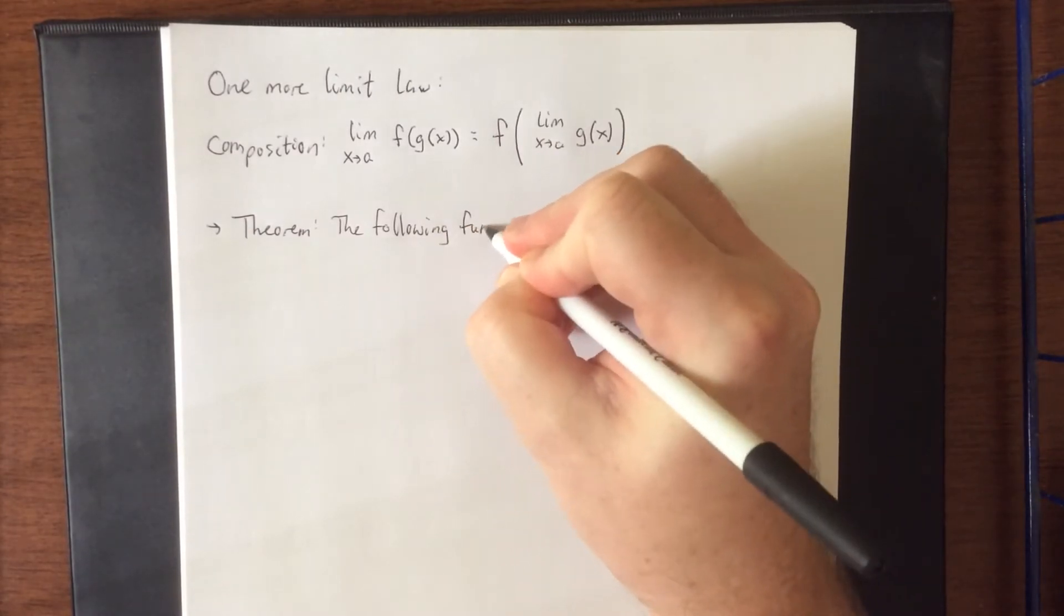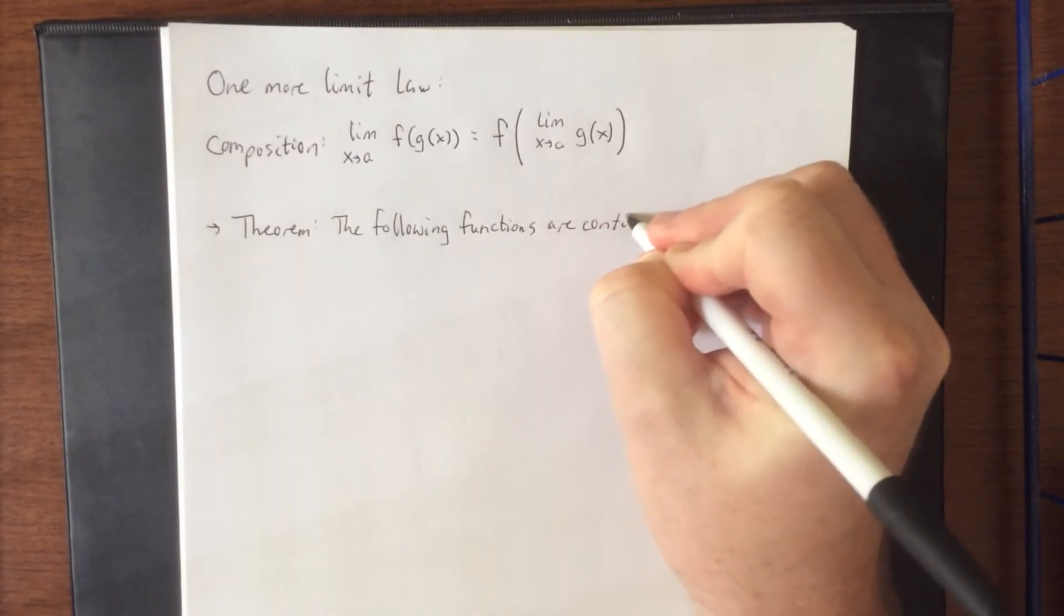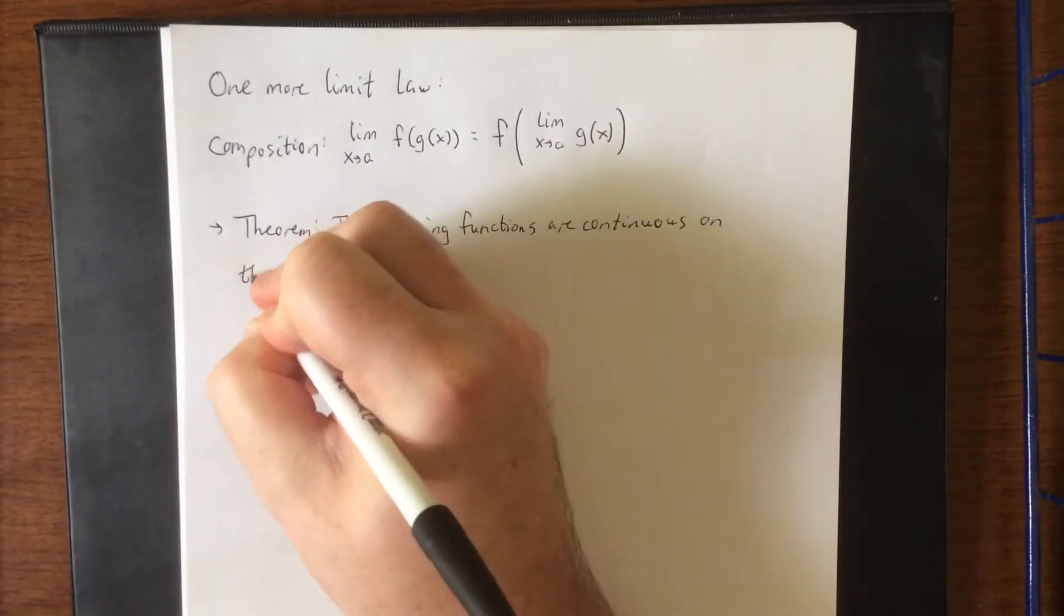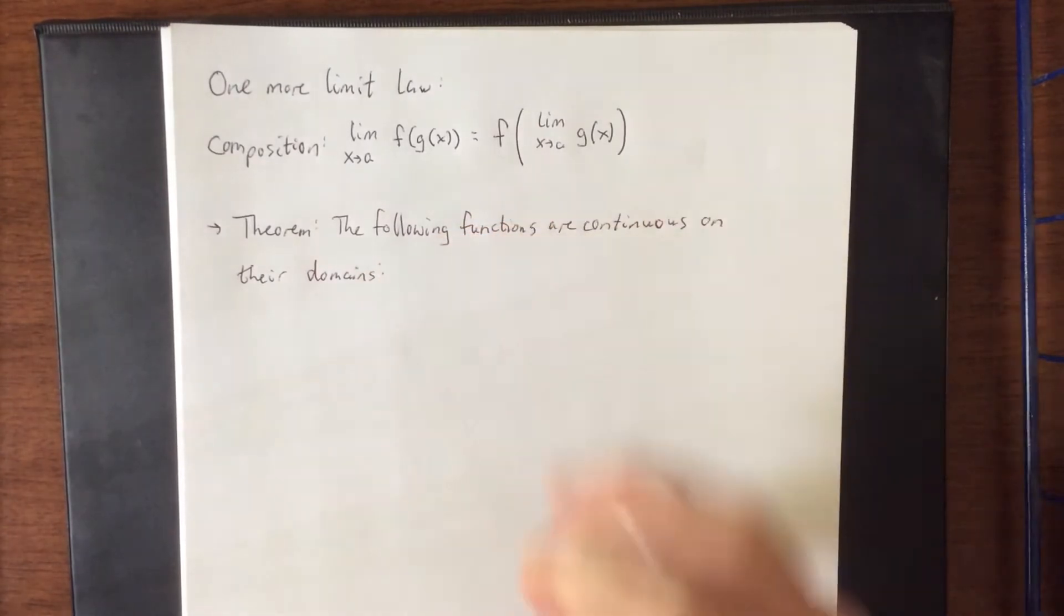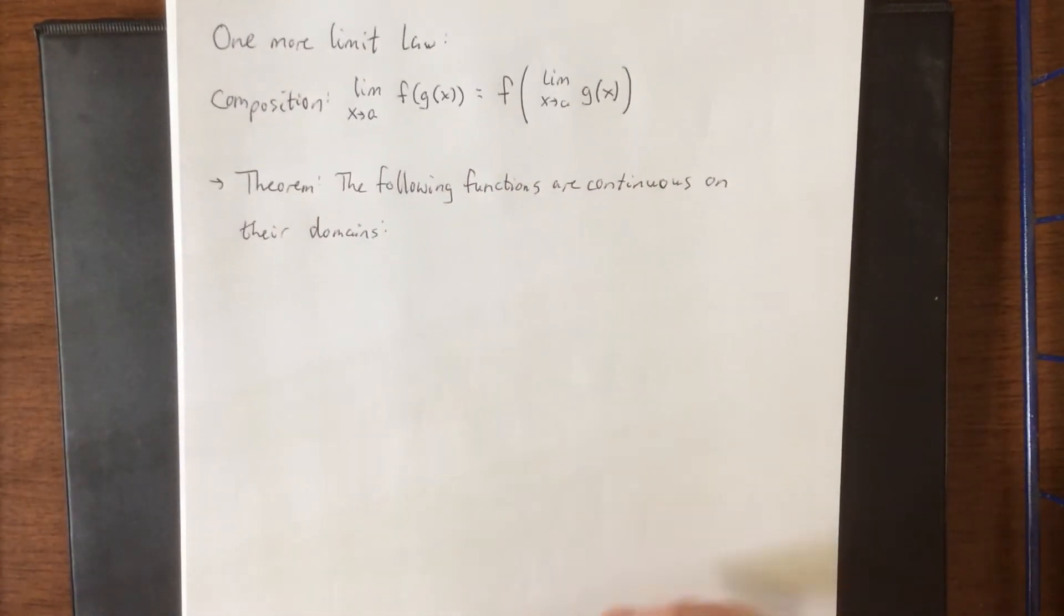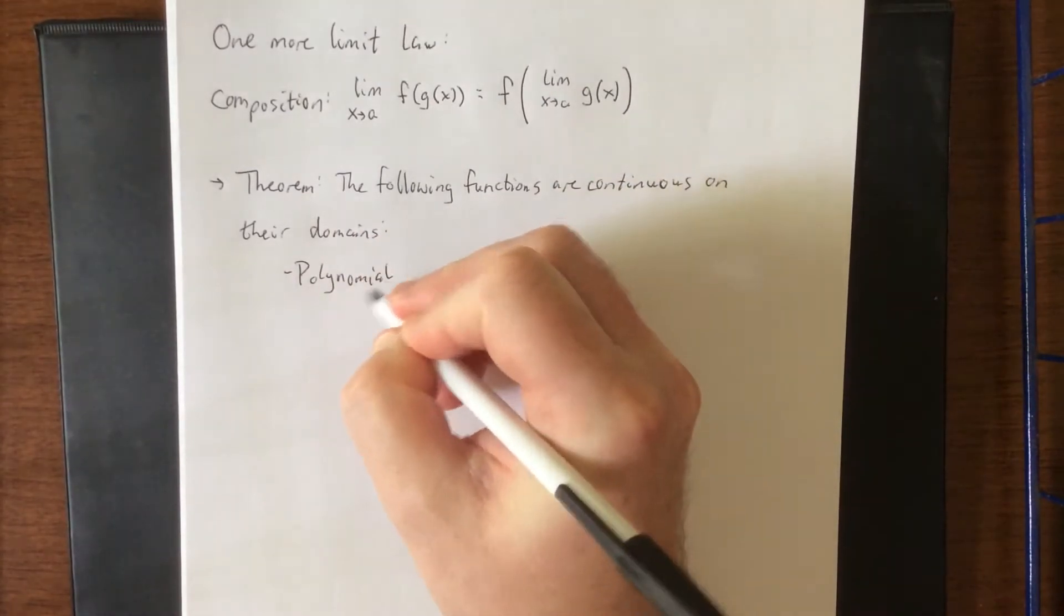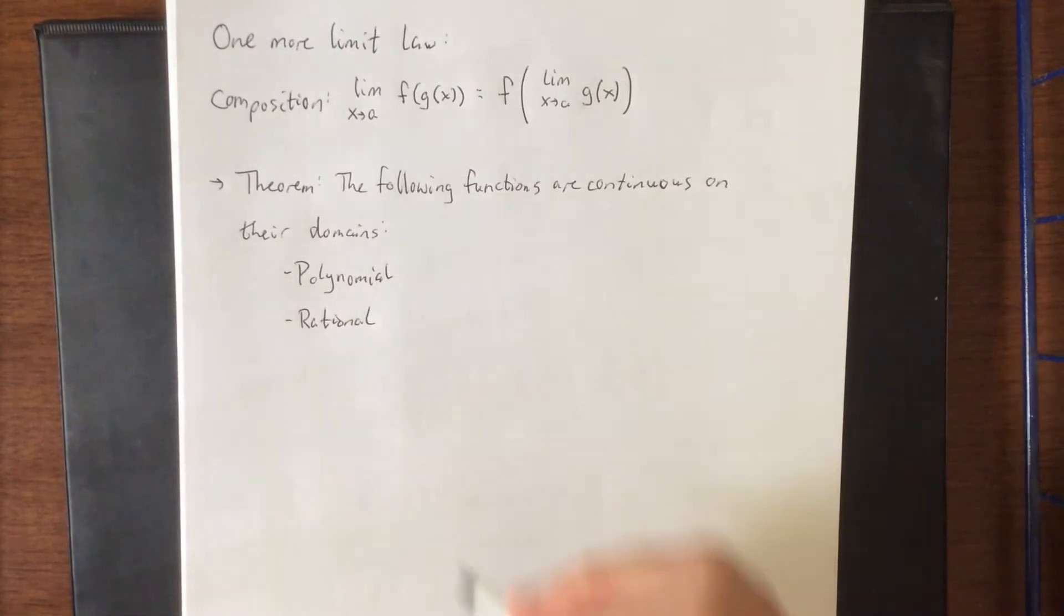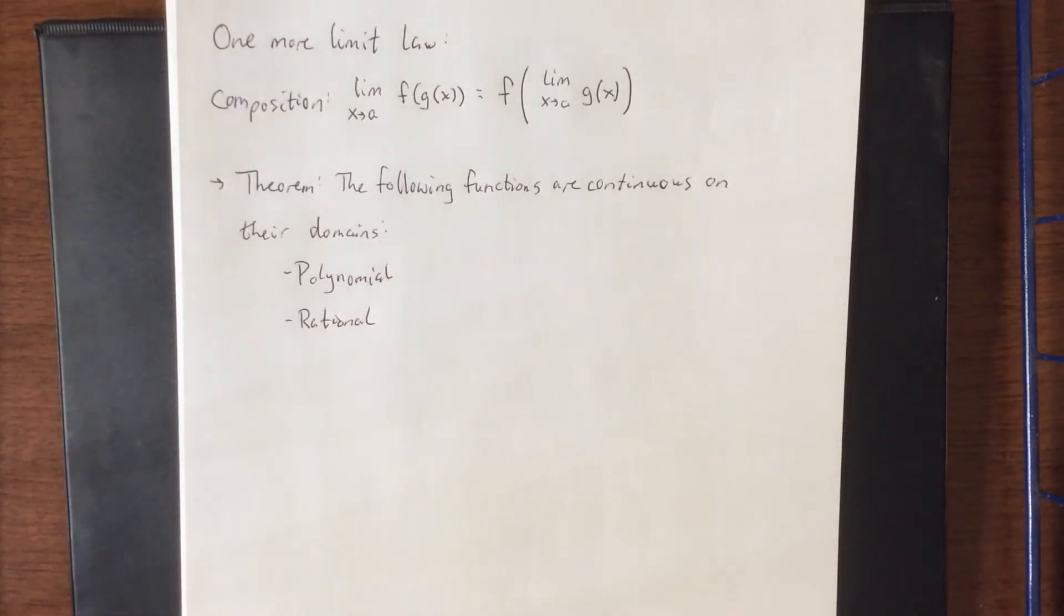So here's an important theorem that we're going to reference back to many times throughout the course of the semester. The following functions are continuous on their domains. There are two that we've already talked about, and they are polynomial, whose domain is automatically all real numbers, as well as rational functions, which are continuous on their domains, and the only domain issues that you're going to run into are where denominators are equal to zero.